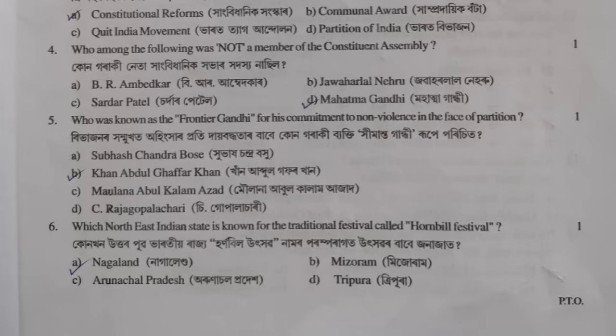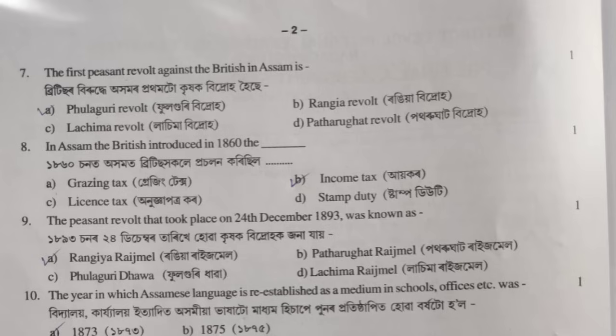The next question: which Indian state is known for the traditional festival called the Hornbill Festival? The answer is option A — correct. And the first prison revolt against the British in Assam — option A is correct.